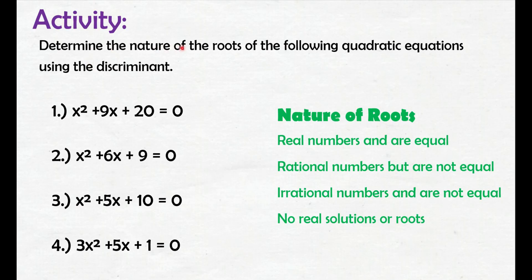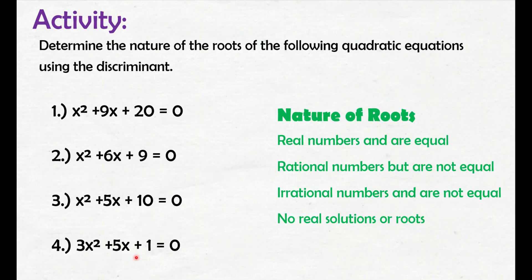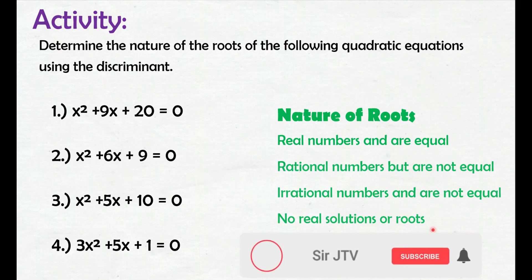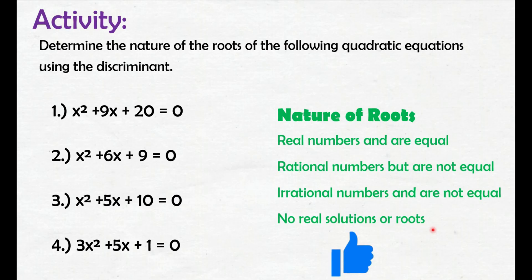And for your activity, determine the nature of the roots of the following quadratic equations by using the discriminant. Number 1: x squared plus 9x plus 20 equals 0. Number 2: x squared plus 6x plus 9 equals 0. Number 3: x squared plus 5x plus 10 equals 0. Number 4: 3x squared plus 5x plus 1 equals 0. Choices: real numbers and are equal; rational numbers but are not equal; irrational numbers and are not equal; and no real solutions or roots. Sana marami kayong natutunan sa video lesson na ito. Huwag kalimutang mag-subscribe, mag-like at i-share itong video lesson. Paalam!